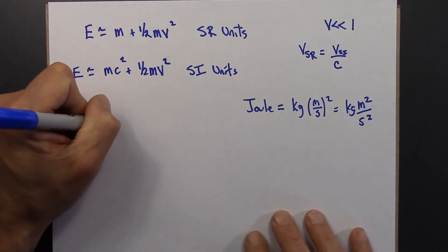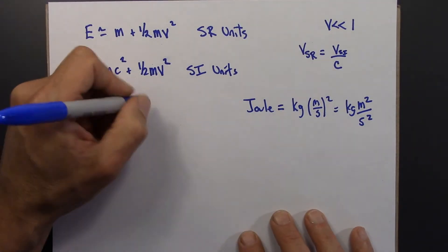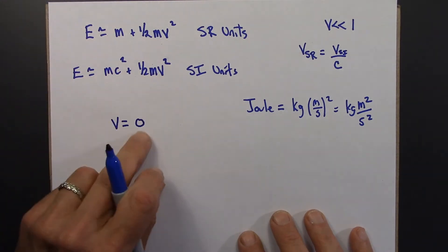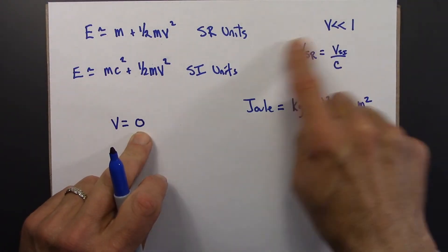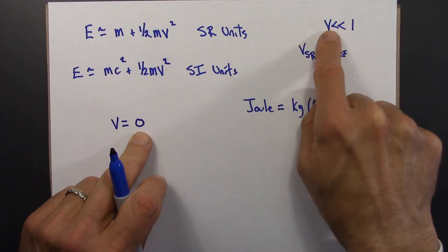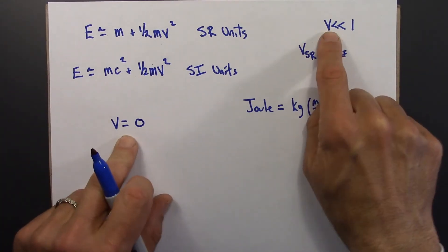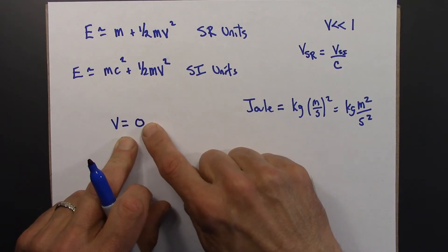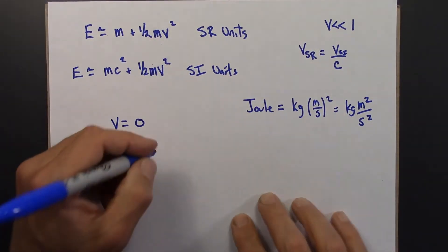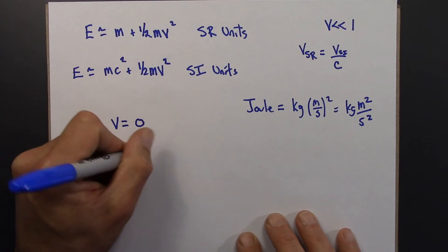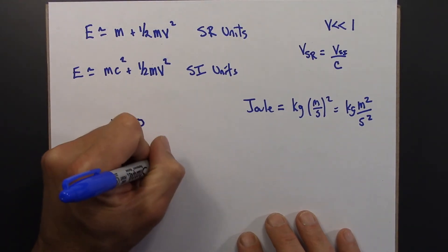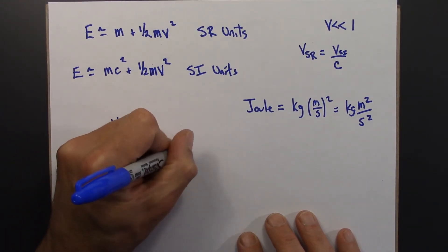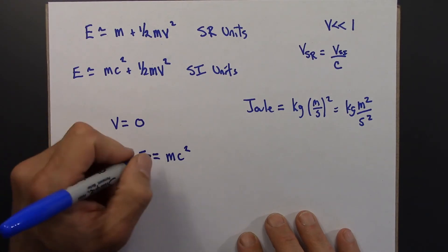And in particular, suppose that the object is at rest, which is for V, because that's like the smallest V can be, certainly within this limit. If V is at rest, then this term is zero, and we have the famous equation E equals MC squared.